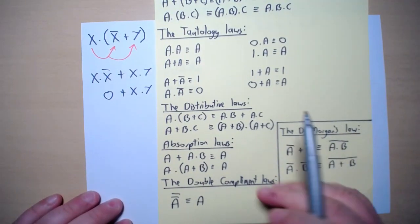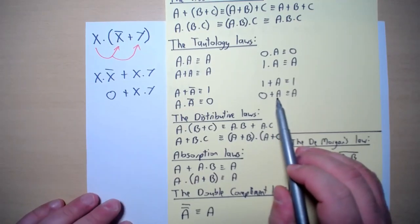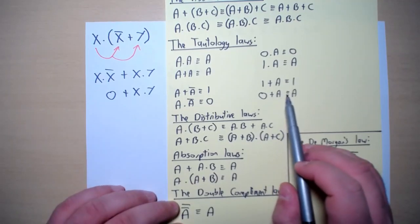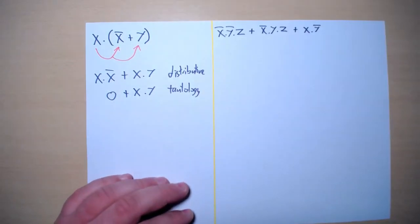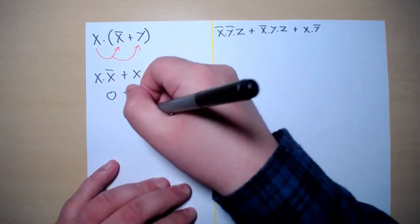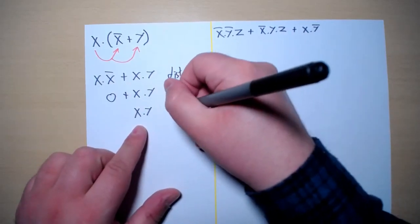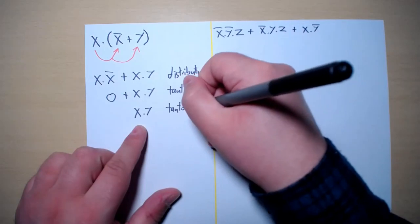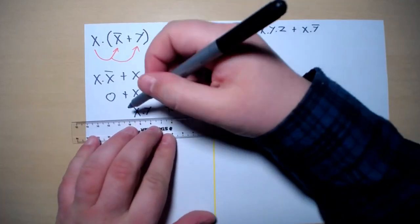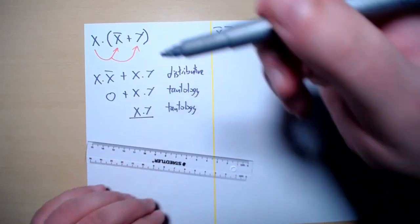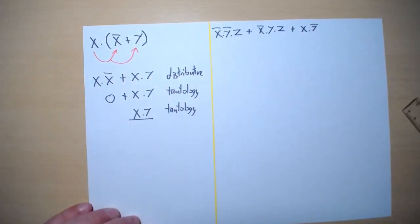Now we have zero or X and Y. Using the tautology law, we know that zero or something gives us that something. Therefore, using tautology, this becomes X and Y, which is the minimized version of X into X-naught or Y.